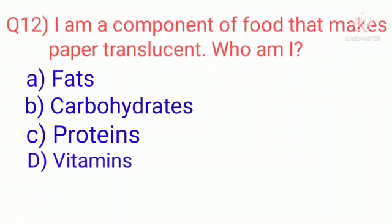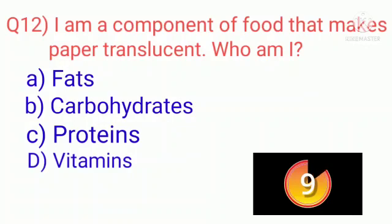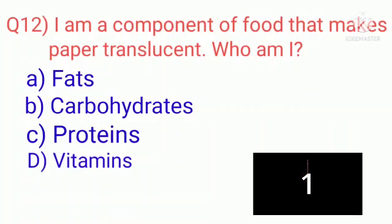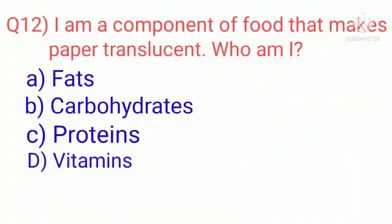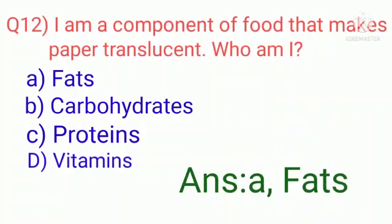Question 12: I am a component of food that makes paper translucent. Who am I? A. Fats, B. Carbohydrates, C. Proteins, D. Vitamins. You have to answer in 10 seconds. Answer is A.